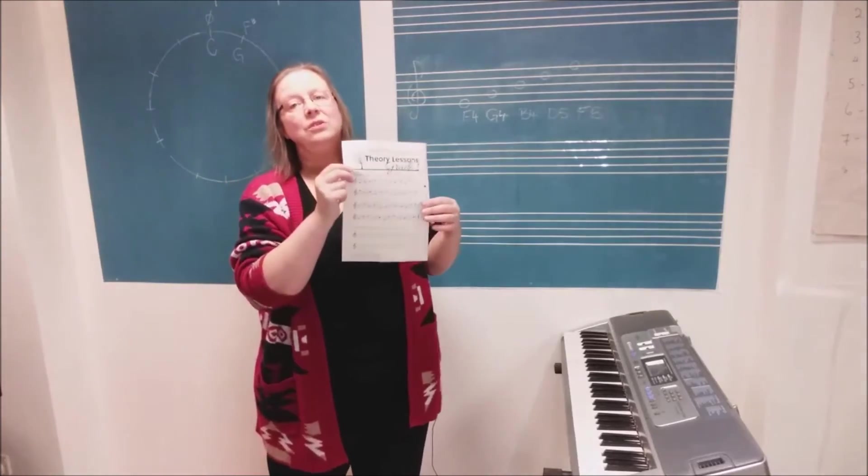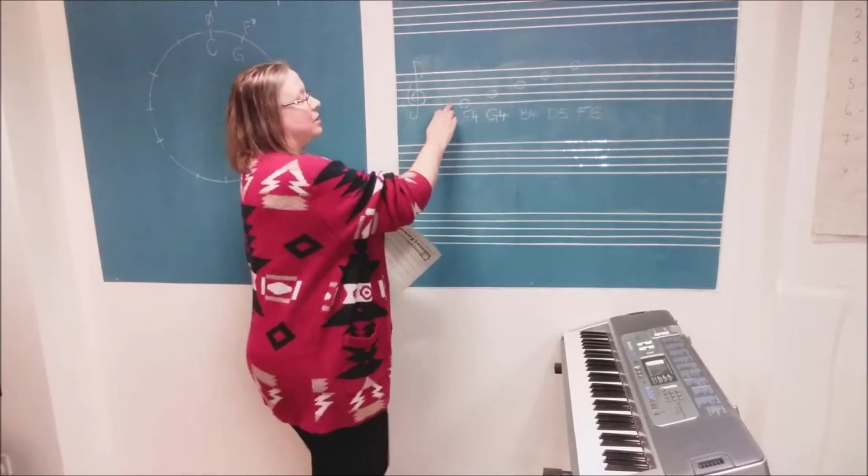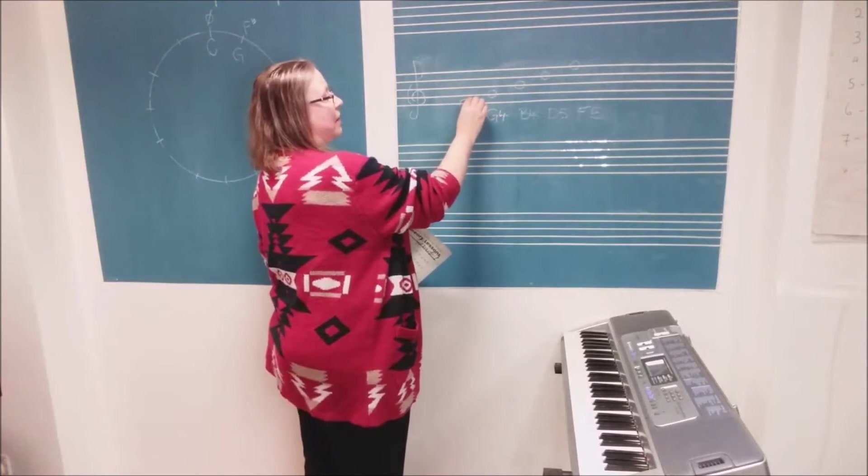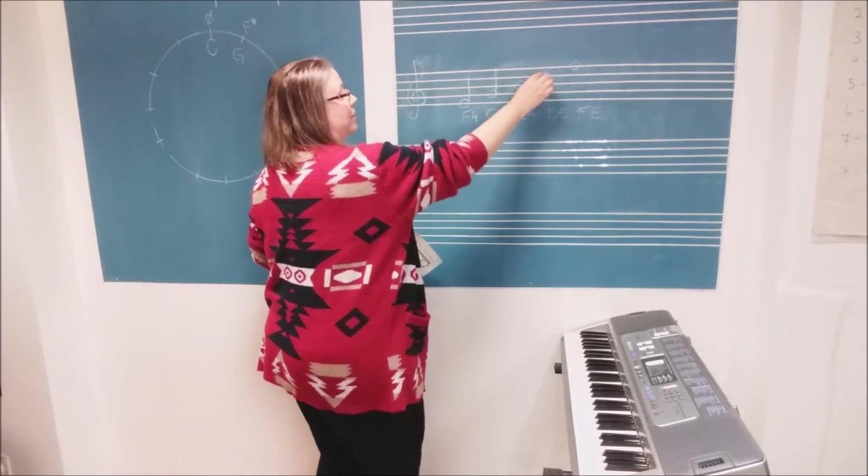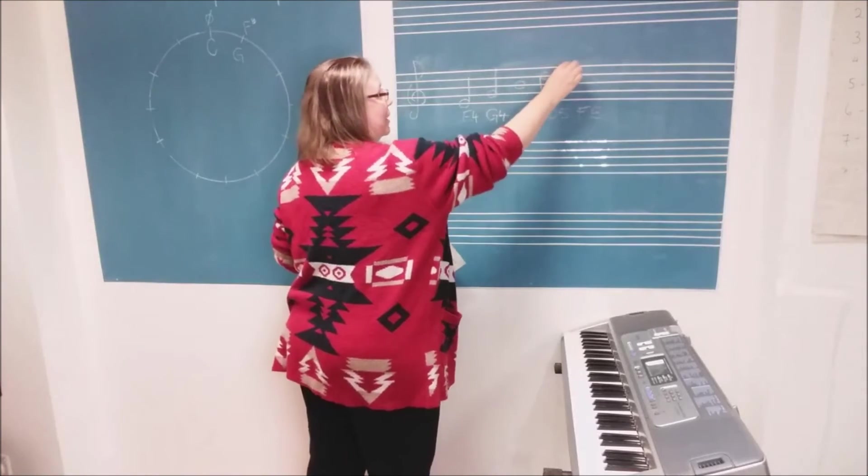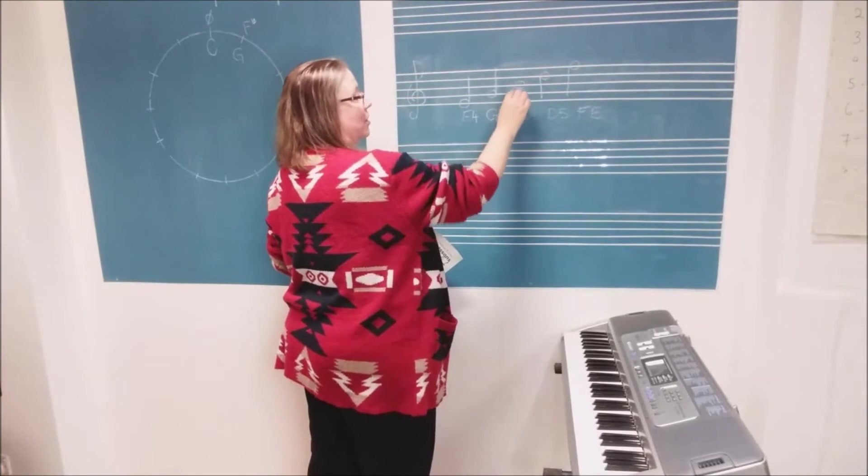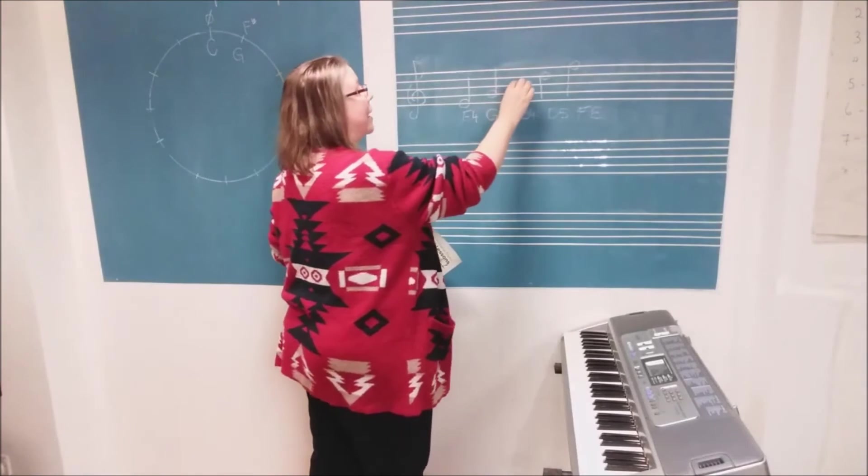To do this, you need to add stems. If the note is below line three, the stem goes up on the right. If it's above line three, it comes down on the left. And if it's on line three, it can go either way—it can go up or down.